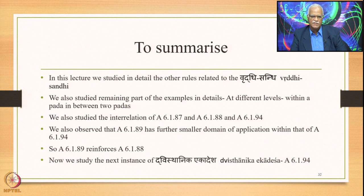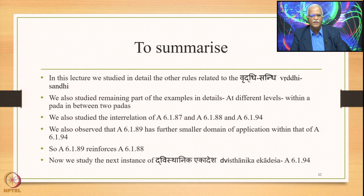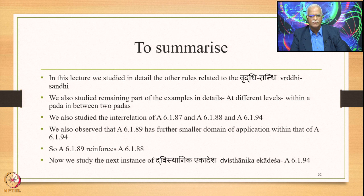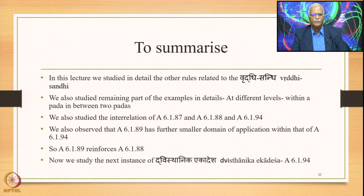To summarize: in this lecture we studied in detail the other rules related to Vriddhi Sandhi, giving an exhaustive treatment of all the rules. We studied the remaining examples at different levels within a padha or between two padhas, and the interrelation of 6.1.87, 6.1.88, and 6.1.94, observing that 6.1.89 has a further smaller domain of application within that of 6.1.94, so 6.1.89 reinforces 6.1.88. After Vriddhi Sandhi, we now go to the next instance of Dvishthanika Ekadesha — Pararupassandhi stated by sutra 6.1.94 — in the coming lecture. Thank you for your patience.